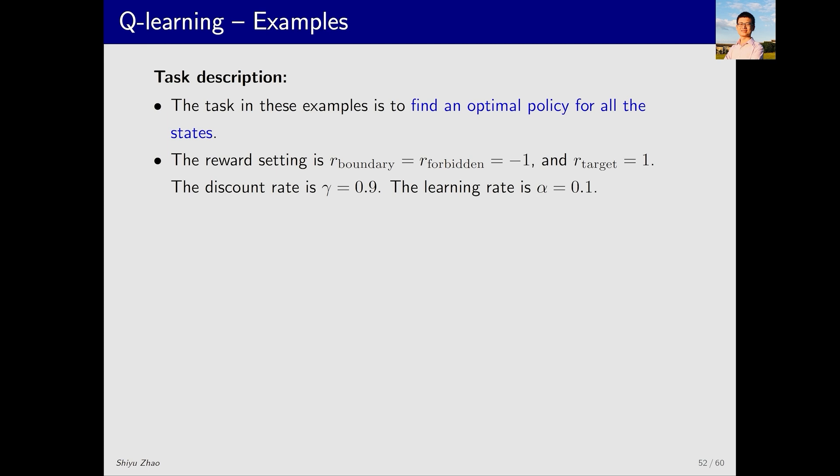In this example, our task is to find an optimal policy for all the states. This is different from the example we used to test SARSA, where we only needed to find a path from a specified starting state to the target state. In the task here, we need to find the optimal policy for all states, not just a specific path. This distinction is important, so please pay attention to the specific requirements of each task.